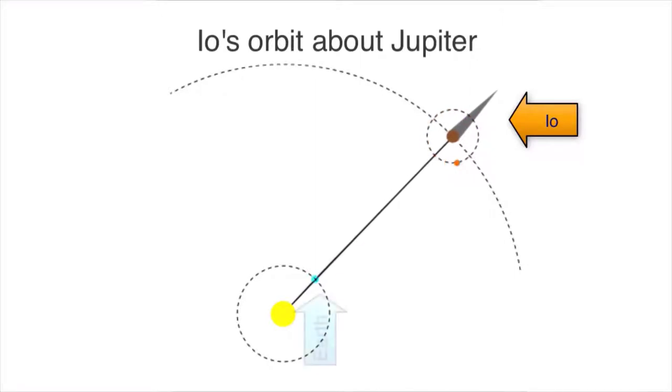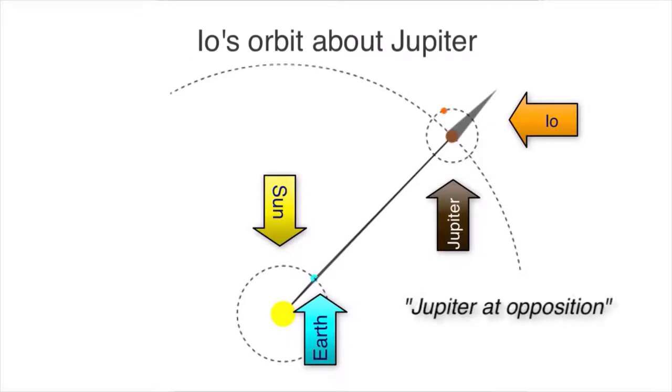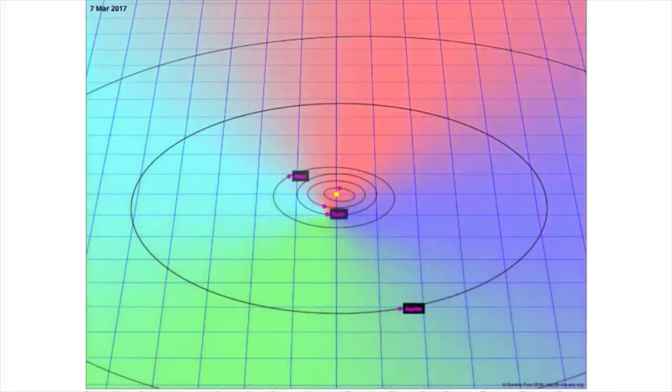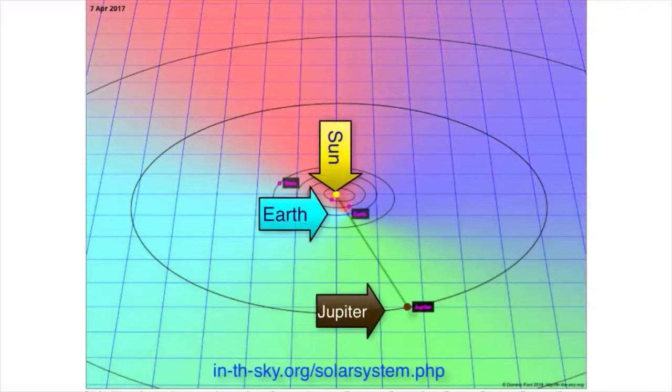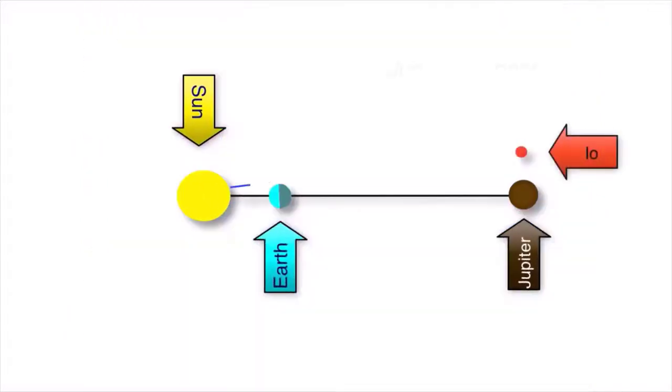These measurements were taken when the Earth was between the Sun and Jupiter, or when Jupiter was in opposition. This way, Jupiter and its moons could be easily seen high in the sky. Remember, Jupiter and its moons are non-luminous, but they reflect the sunlight towards the Earth and into Galilean telescopes.